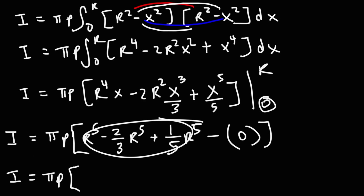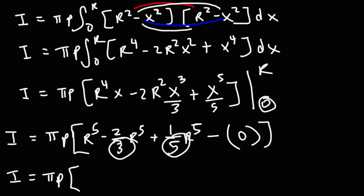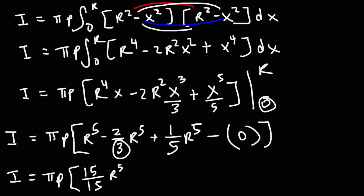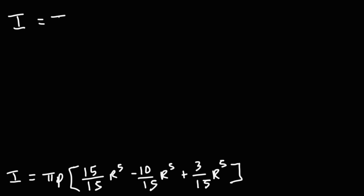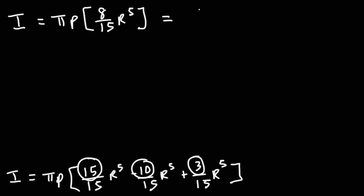To combine these terms we need common denominators. The common denominator for 3 and 5 is 15. So we have 15/15 · R⁵ − 10/15 · R⁵ + 3/15 · R⁵. That gives (15 − 10 + 3)/15 = 8/15. So the result is (8/15)R⁵, and therefore the inertia equals 8πρ/15 · R⁵.